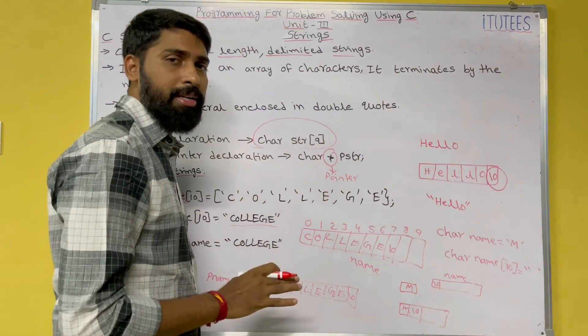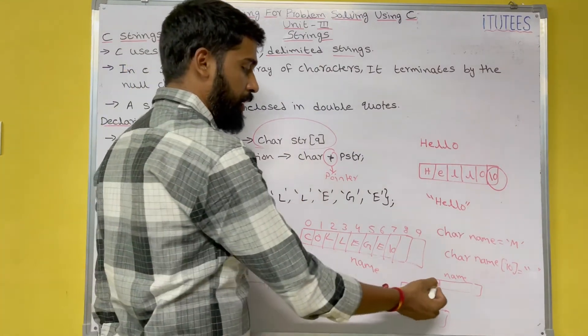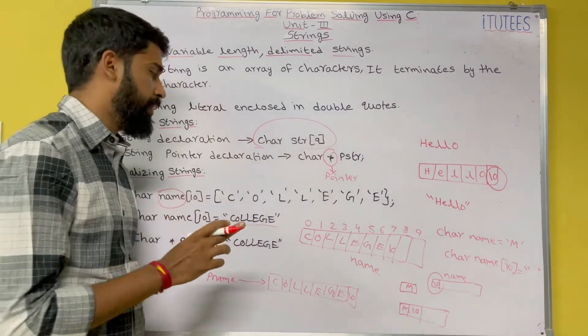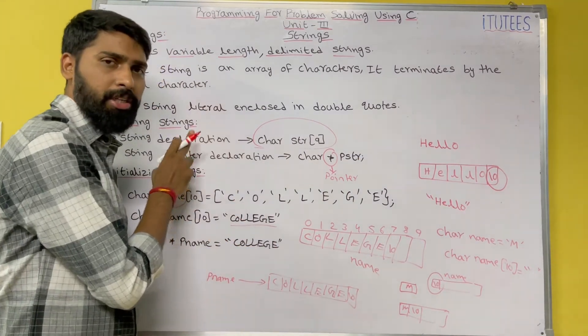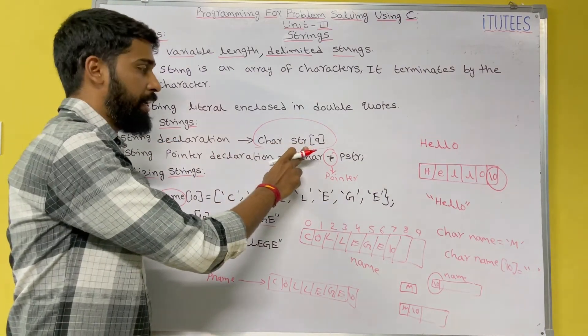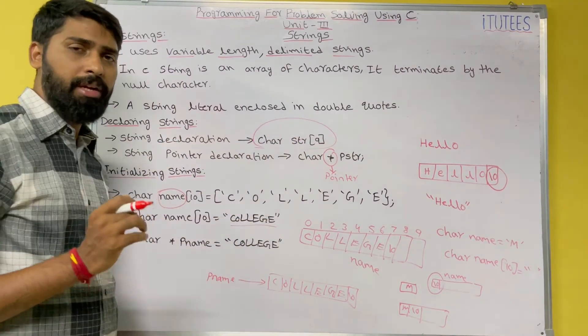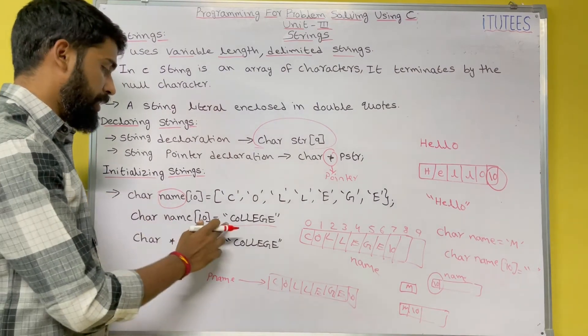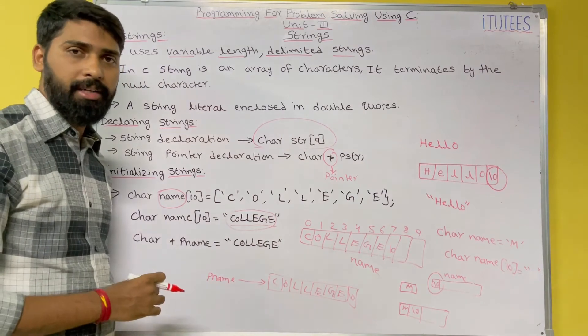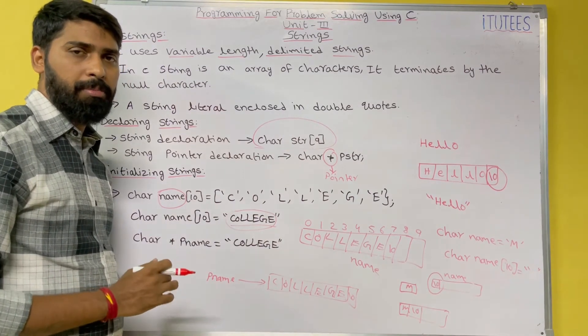In C language, how we can identify the end of the string by using the delimiter slash zero. So how we can declare in two ways, one is string declaration, another one is string pointer declaration: data type, string array name, size. How we can initialize the string? In double quotation, you are going to give the data. So this is about C strings.